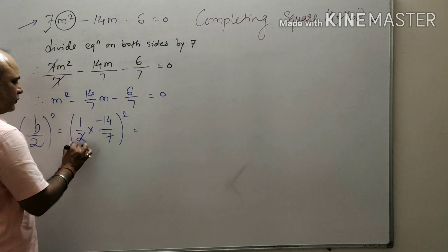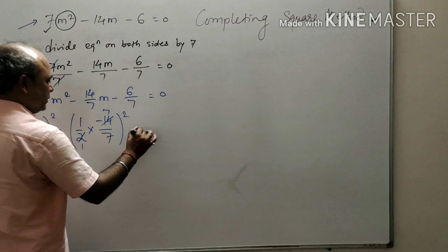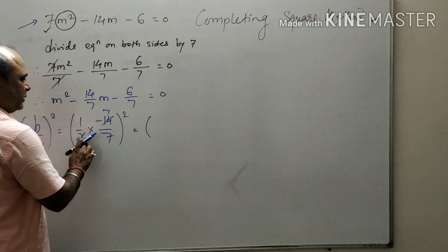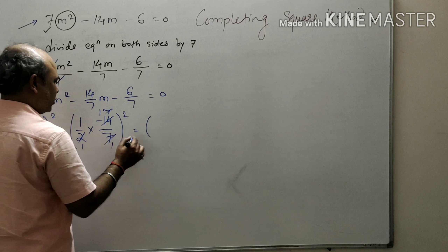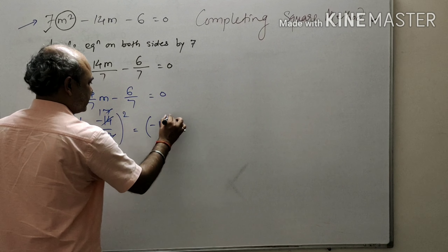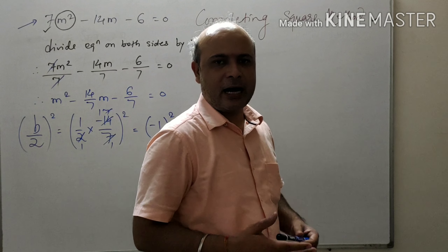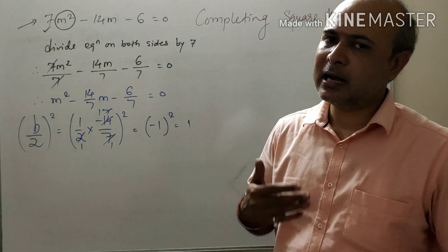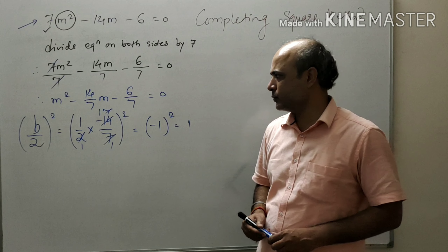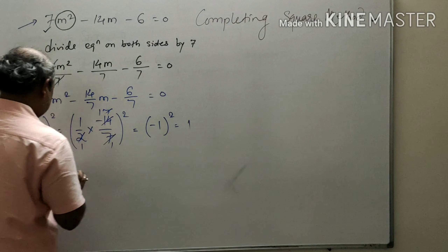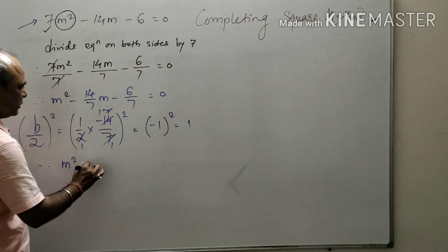We divide the equation by 7 because we want the coefficient of m² (or x² or y²) to be 1. Now we will find the (b/2)² term. Here b is the coefficient of m, which is -14/7. So (b/2)² = (1/2 × (-14/7))², and the bracket is completed and squared.